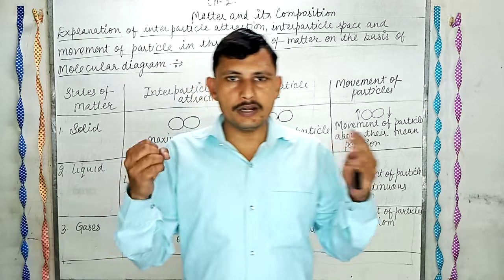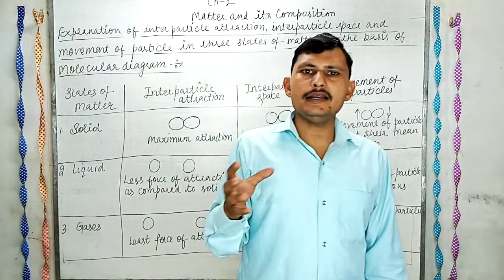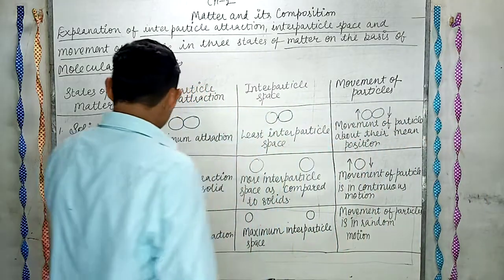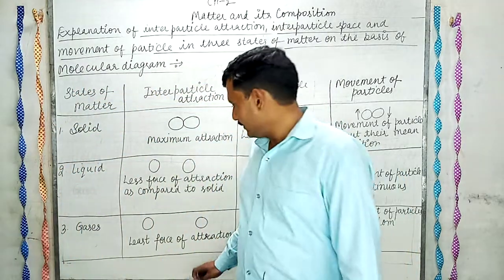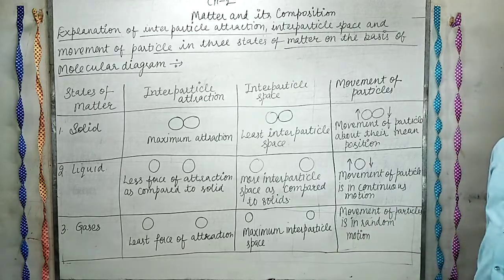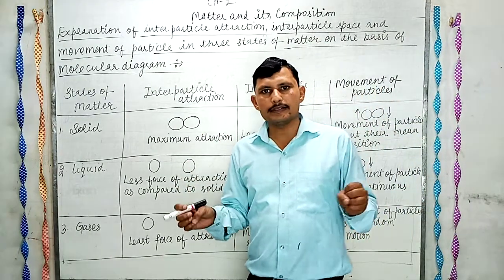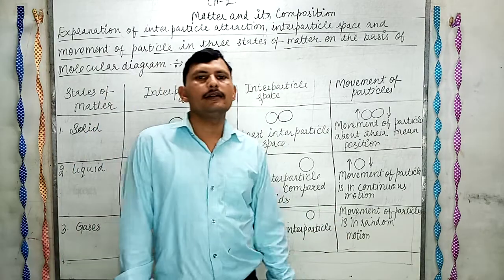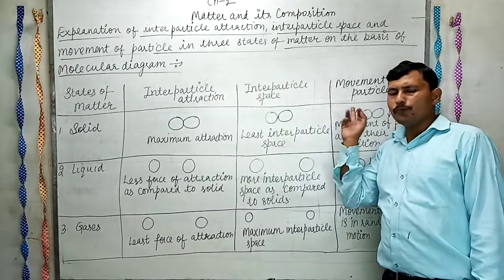In the case of gases, the force of attraction is least, inter-particle space is maximum, and the movement of the particle is random motion in all directions. Because there is more space, particles can move in random directions freely. This completes the explanation of inter-particle attraction, inter-particle space, and movement of the particle on the basis of molecular diagrams.